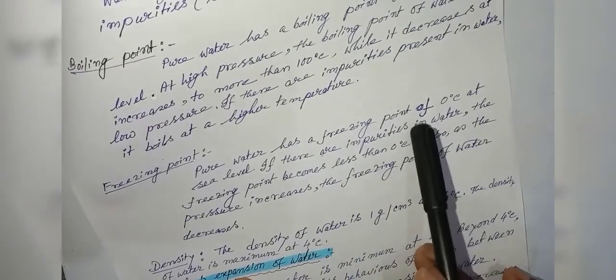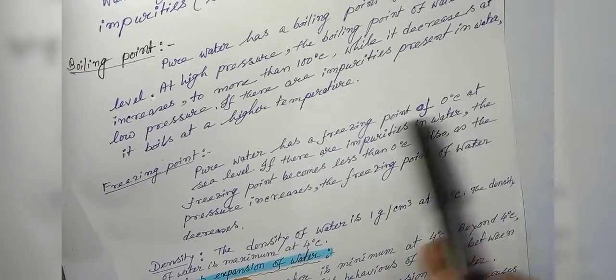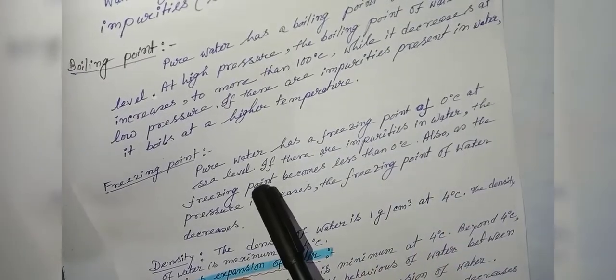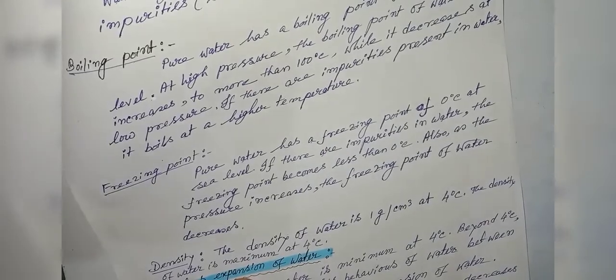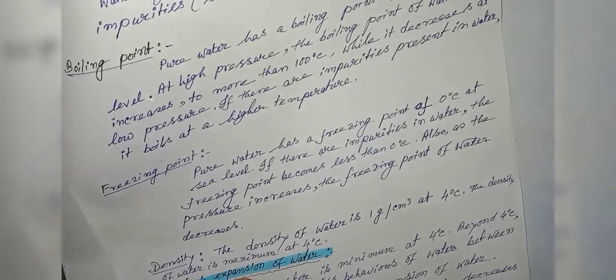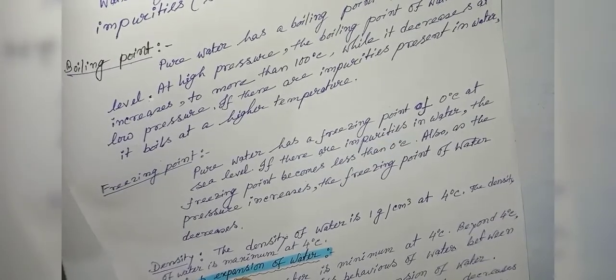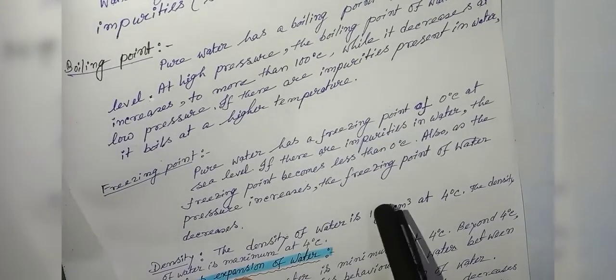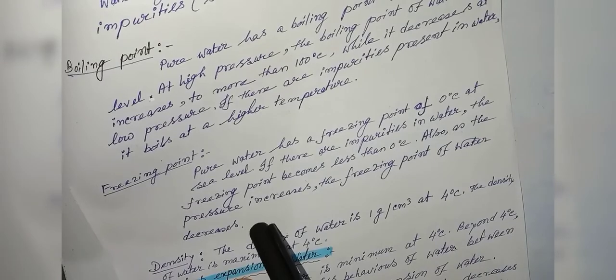Freezing point: Pure water has a freezing point of 0 degrees centigrade at sea level. If there are impurities in water, the freezing point becomes less than 0 degrees centigrade. Also, as the pressure increases, the freezing point of the water decreases.